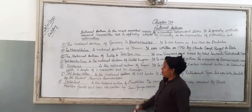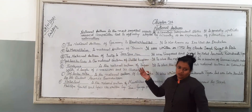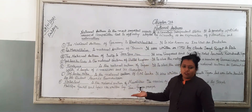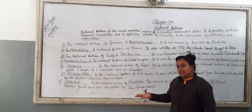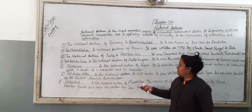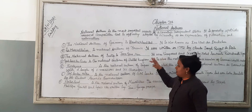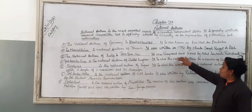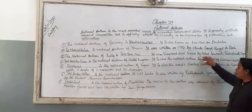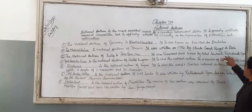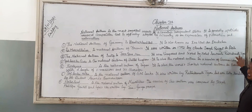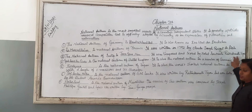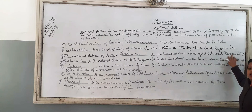The National Anthem of India is Jana Gana Mana. It was composed by Rabindranath Tagore. National Anthem of India is Jana Gana Mana, composed by Rabindranath Tagore.